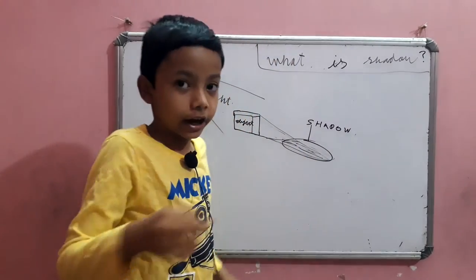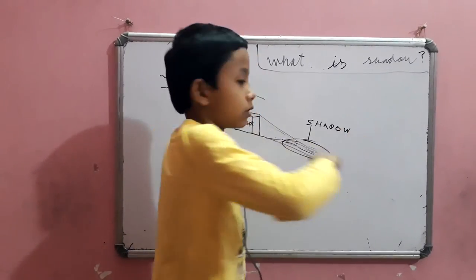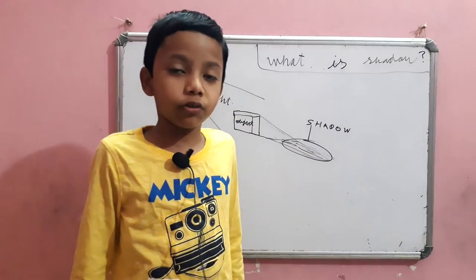So, we call it a shadow. And it also happens on solar and lunar eclipse.